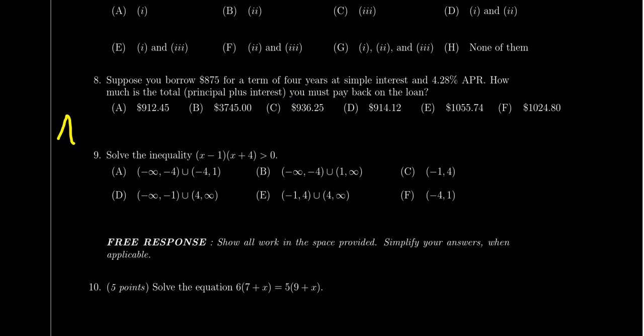We're going to use our simple interest formula. The amount that's due back will be principal times one plus RT, where P is our principal. So that'd be $875.